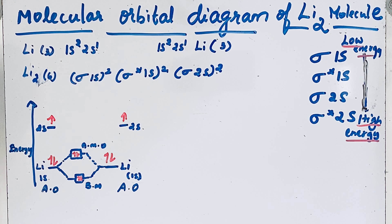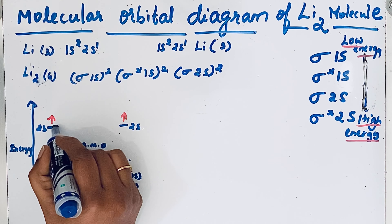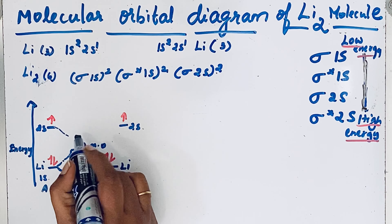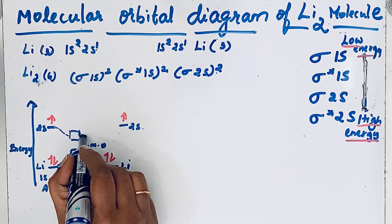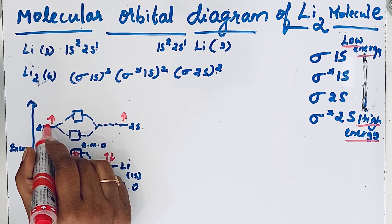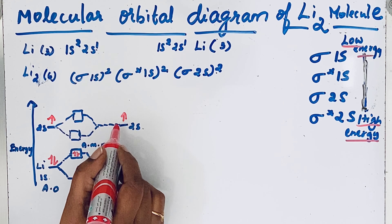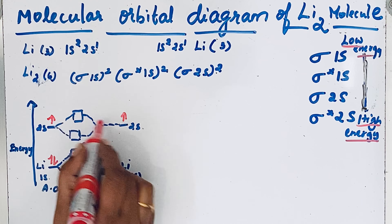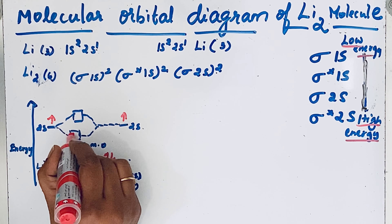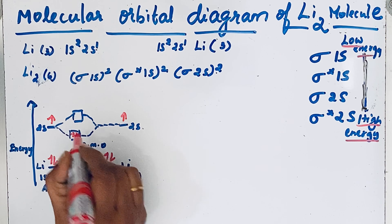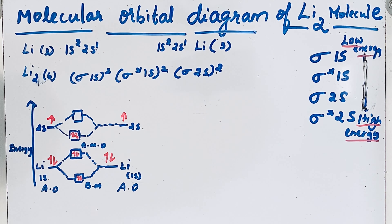When these same atomic orbitals combine, they form bonding molecular orbitals and antibonding molecular orbitals in the same way. In the lithium atom the 2s orbital has one electron, and here also one electron. So these two electrons combine into the bonding molecular orbital. The antibonding molecular orbital becomes empty.